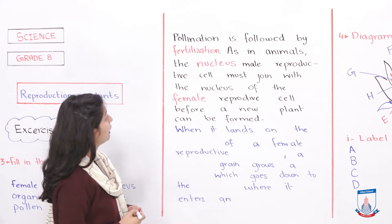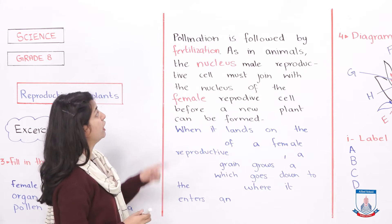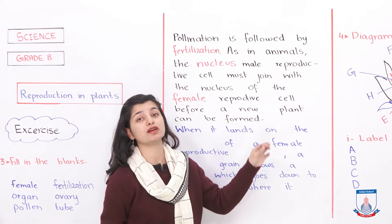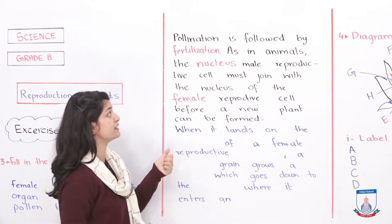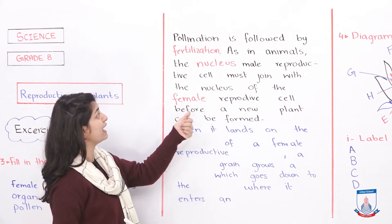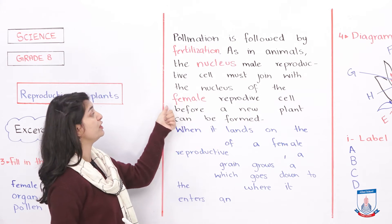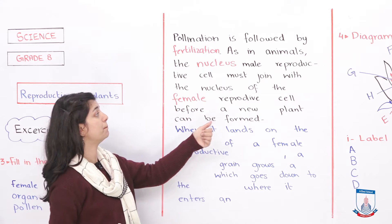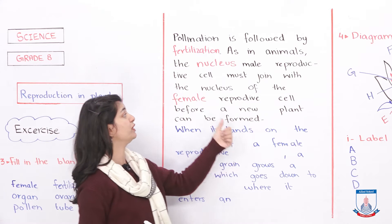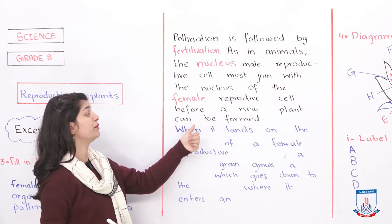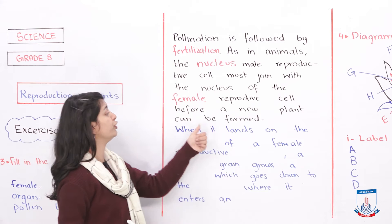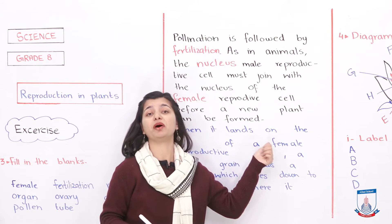Now reading the full passage sentence: pollination is followed by the process of fertilization. As in animals, the nucleus of the male reproductive cell must join with the nucleus of the female reproductive cell before a new plant can be formed.